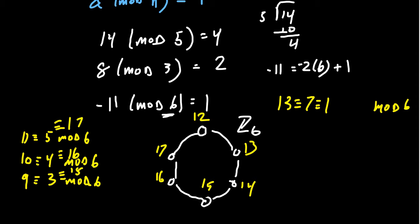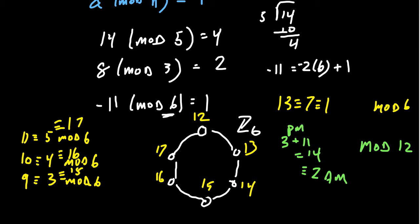This object isn't foreign to us — when we look at our clocks, we're already working mod 12. If it's presently 3 p.m. and you want to know what time it is 11 hours from now: 3 plus 11 equals 14, but we don't say 14 p.m. We replace 14 with 2, so that's 2 a.m. If you're downloading something and it takes 11 hours, it'll finish at 2 a.m. When we work with hours in a day, we're working mod 12.